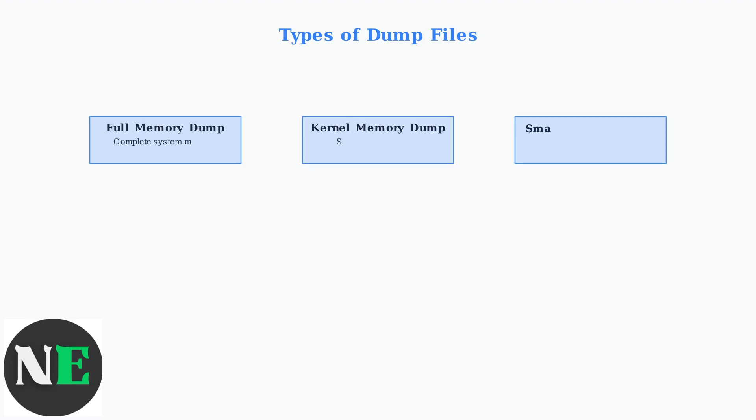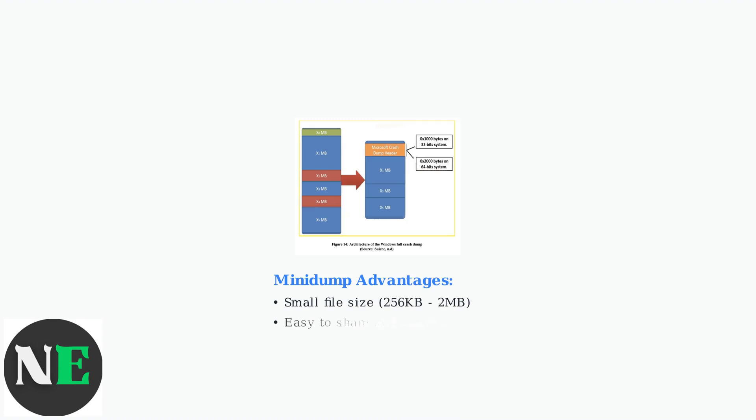There are several types of dump files, each serving different purposes. Full memory dumps capture everything, but are very large. Kernel memory dumps focus on system-level information only. Mini-dumps are particularly valuable because of their small size — they contain just the essential information needed for analysis while being easy to share and store.